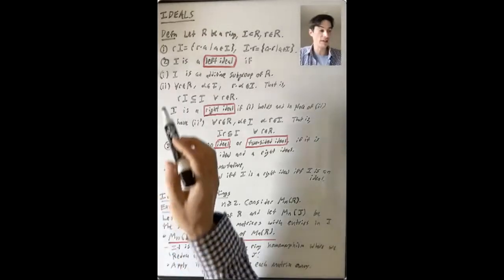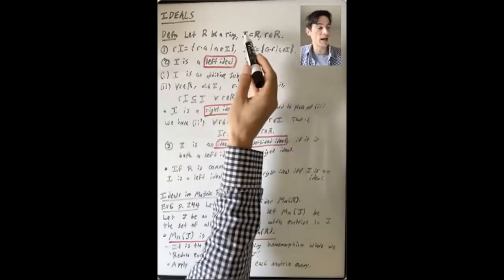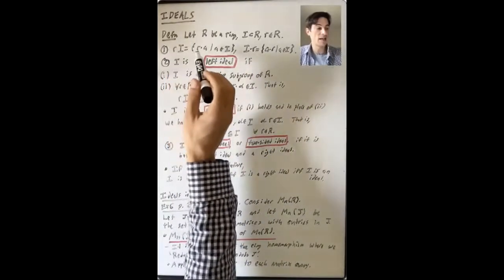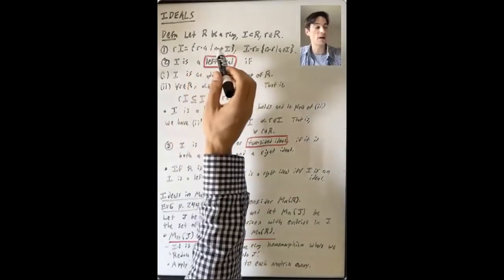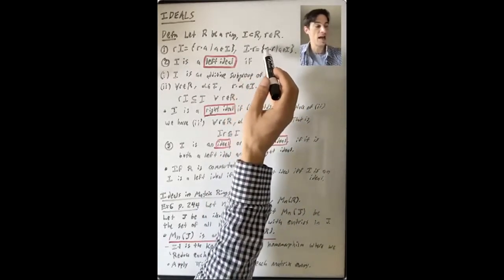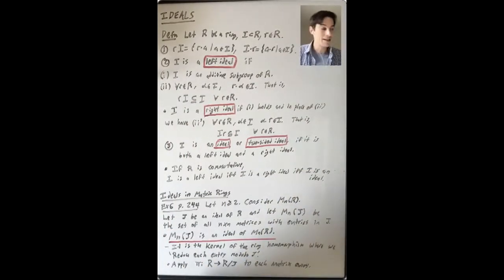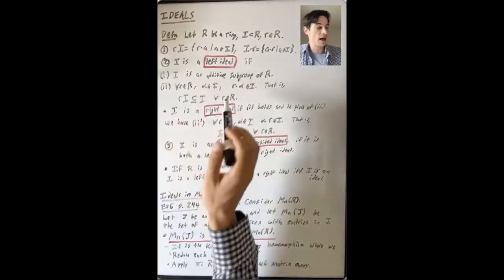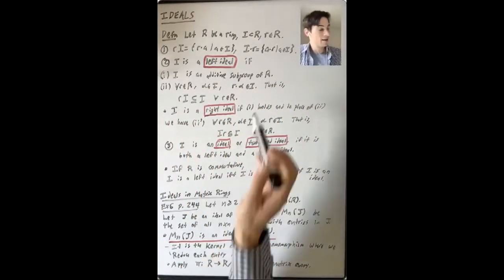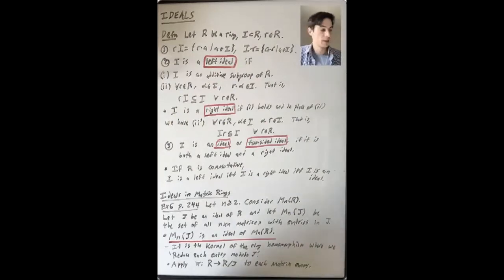Let's begin by reviewing the definition of ideals from section 7.3. R is a ring, I is a subset, and for a little r in R, rI denotes the set of all things of the form r times a where a goes through elements of I, and Ir is everything of the form a times r. I is a left ideal if it's an additive subgroup of R and is closed under left multiplication by elements of R — that is, for all r in R and alpha in I, r times alpha is back in I, i.e., rI is a subset of I.